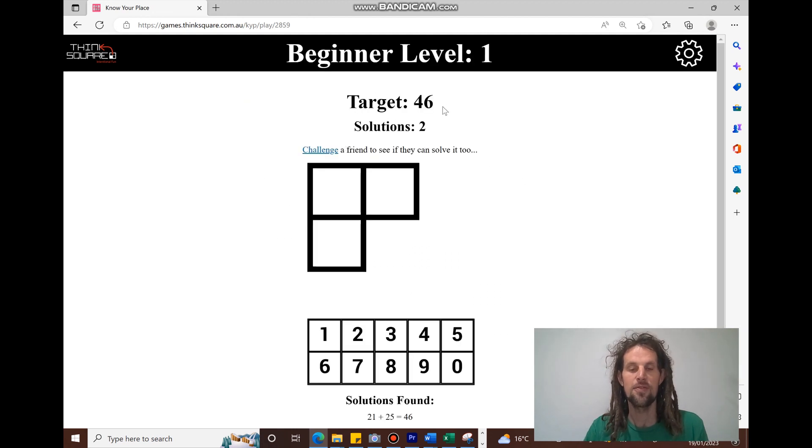The target here is 46, and there's two solutions to this. So you could kind of halve that number. What's happening in this is you're creating a two-digit number from left to right and a two-digit number from top to bottom. That's it on this one.